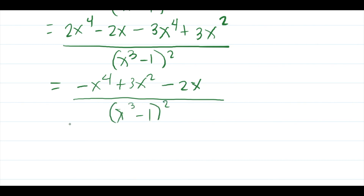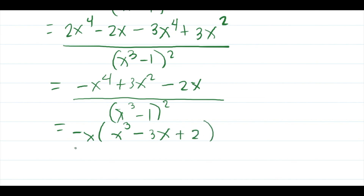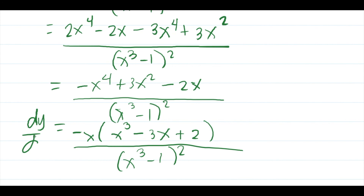Combining like terms: 2x to the 4th minus 3x to the 4th is negative x to the 4th, plus 3x squared, minus 2x. Factoring x from the numerator: negative x times (x cubed minus 3x plus 2), all divided by (x cubed minus 1) squared. This is dy over dx — our final answer.